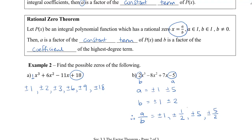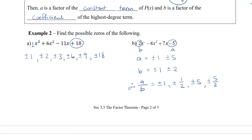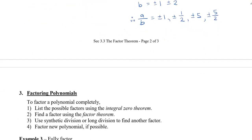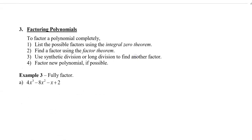To finish off, let's do one example of how all of this ties together. To factor a polynomial completely, follow these steps: first, list the possible factors using the Integral Zero Theorem or Rational Zero Theorem; then find a factor using the Factor Theorem; then use synthetic or long division to find the other factor; and finally factor the new polynomial if possible.